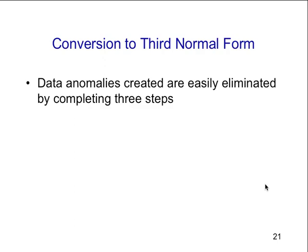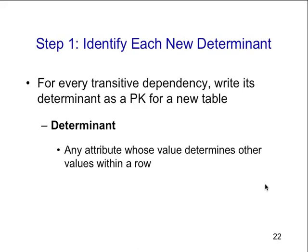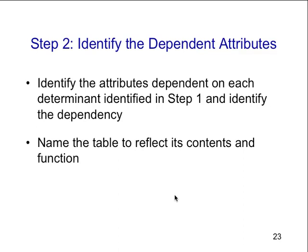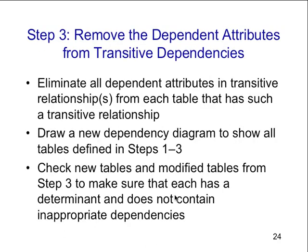Now we want to convert it to a third normal form database. The data anomalies are easily eliminated by completing the third normal form step in three steps. Number one: identify each new determinant. For every transitive dependency, write its determinant as a primary key for a new table — we're getting rid of those transitive dependencies. A good definition of a transitive dependency is any attribute whose value determines other values within a row. Then identify the attributes dependent on each determinant and name the table to reflect its contents and function.